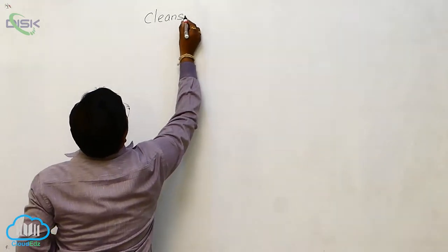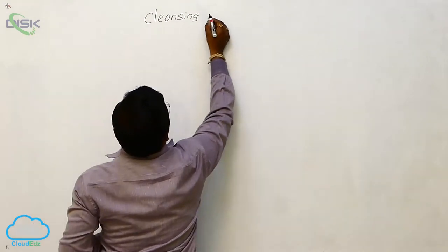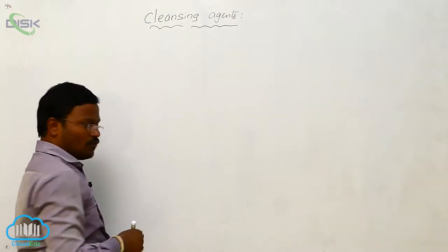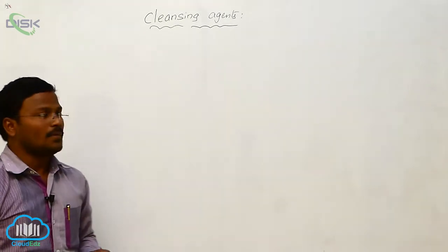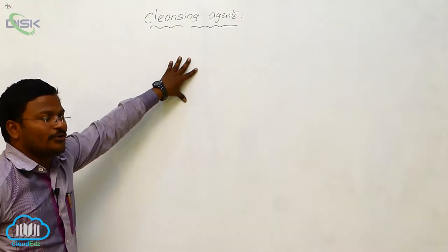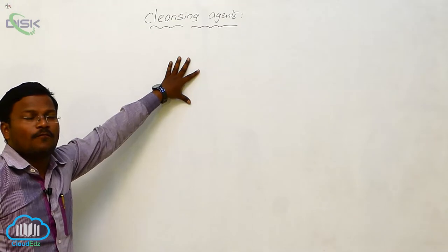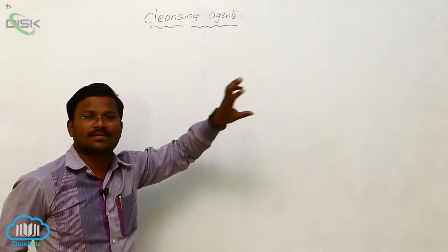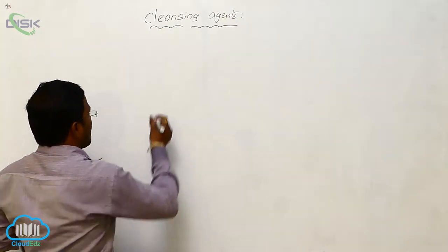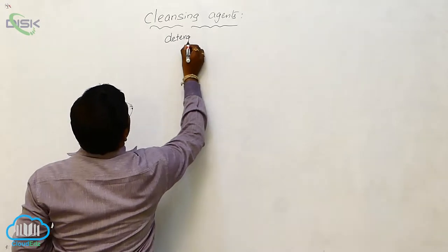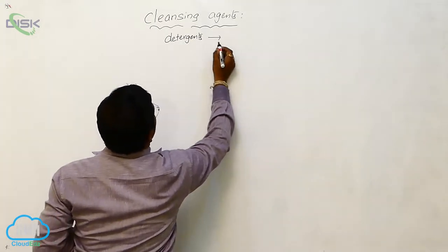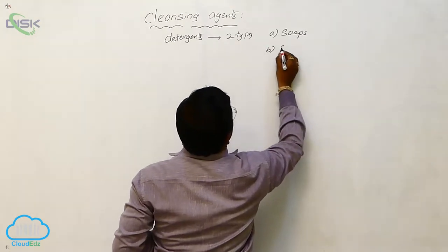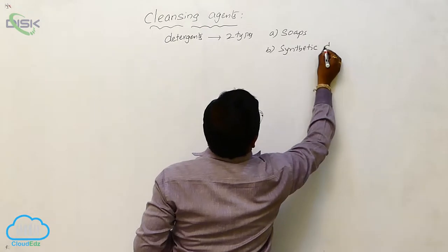One more type of chemical substance used in daily life is cleansing agents. Cleansing agents are chemical substances used to clean fiber, fabric, and skin. These are essential chemical substances in everyday life, also called detergents. Two types of detergents are used: soaps and synthetic detergents.